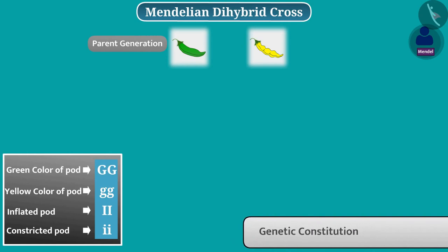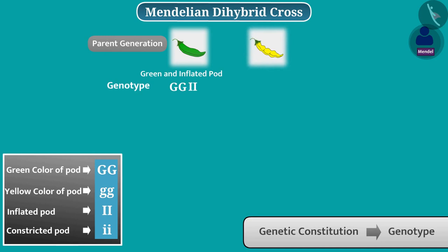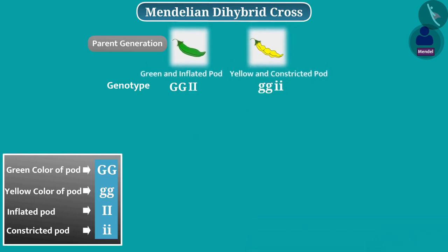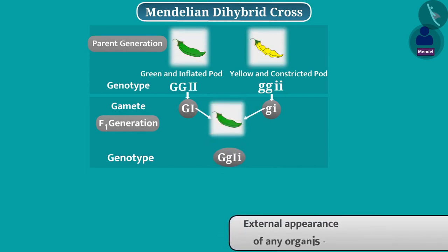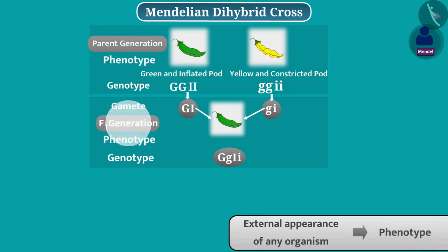Genetic constitution of any organism is called its genotype. The genotype of the parent with green and inflated pod is like this, and the genotype of the parent with yellow and constricted pod is like this. Since both parents have the same alleles for two characters, there is formation of only one type of gamete in each parent. Therefore, the genotype of offspring formed by fusion of these two gametes would be like this. The external appearance of any organism is called its phenotype. The phenotype of plants of F1 generation will have green colour and inflated shape of pods.